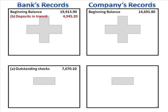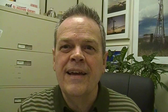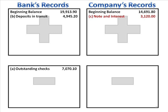Item C says the bank had collected $3,120 on an interest-bearing note left for collection. The face amount of the note was $3,000. A customer owes us, we gave the note to the bank, and told the customer to pay the bank directly. The customer did, and we were unaware until we got the bank statement. This is a time lag — the bank knows about it and processed it, but we didn't. Now that we know, we write it on our side as an addition: $3,000 for the note and $120 in interest revenue.